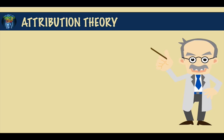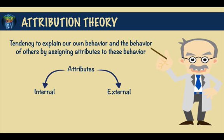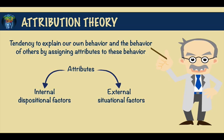Attribution theory suggests that we have the tendency to explain our own behaviour and the behaviour of others by assigning attributes to these behaviours. Attributes can be either internal or external. Internal attributes are dispositional factors, whereas external attributes are situational factors. Depending on the attributes given, the same behaviour can be given two very different explanations.